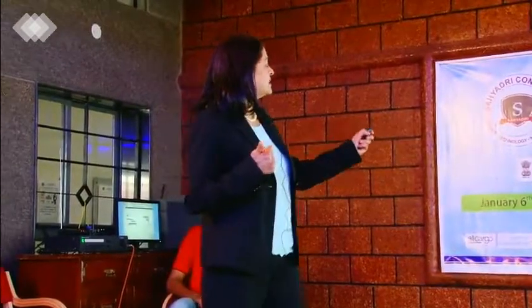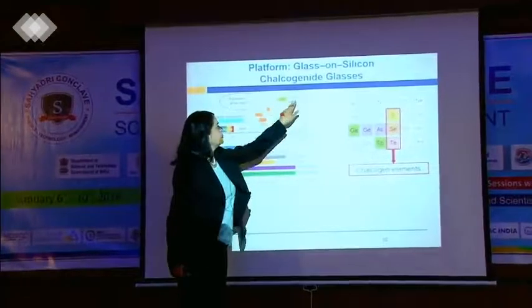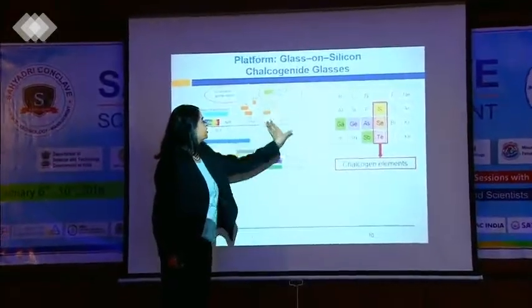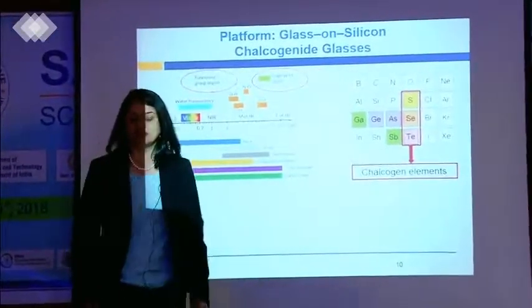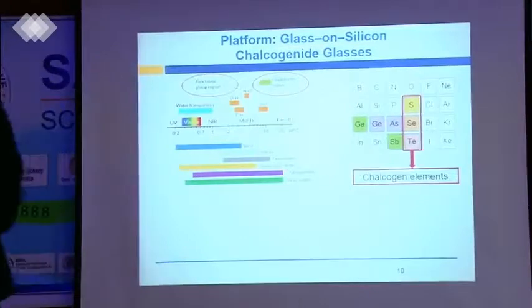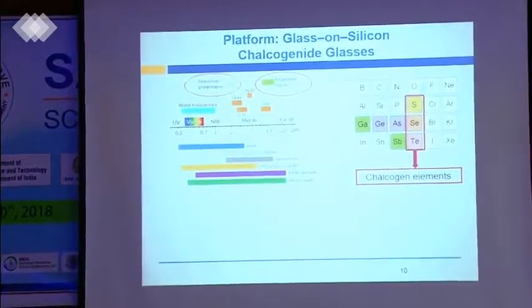This is what I was talking about — the functional group region and the fingerprint region. That is what gives you a fingerprint of the gas. I talked about methane, butane, and propane. All of these gases have different signatures — photonic signatures. They absorb at different wavelengths of light.